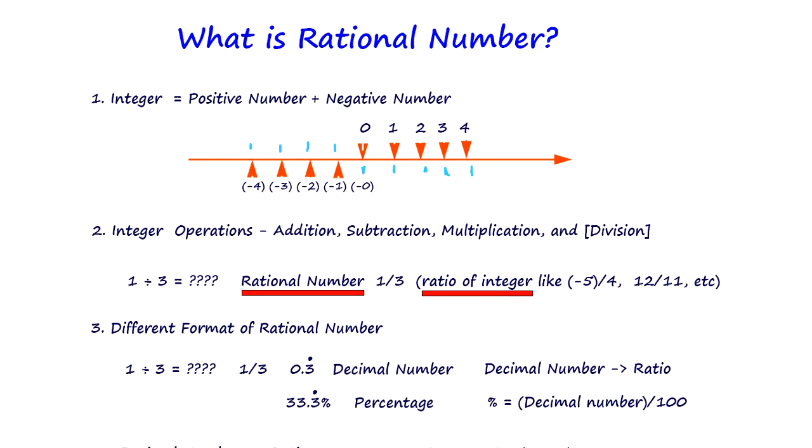So integers are not rational. Why are they not rational? Because integers have four basic operations: addition, subtraction, multiplication, and division.